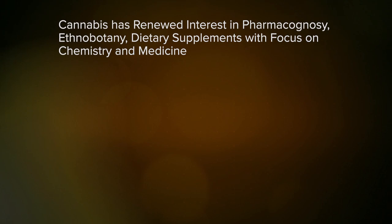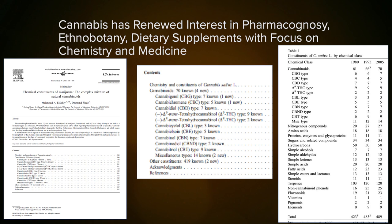When you look at the number of compounds already discovered within the cannabis plant through scientific literature, there's a significant number. The original areas of study were pharmacognosy, ethnobotany, and dietary supplements with a focus on chemistry and medicine. If you went to a store and saw products like black cohosh, echinacea, or omega-3 and omega-6 fish oils — all of those are dietary supplements and each one probably has the same number of components.